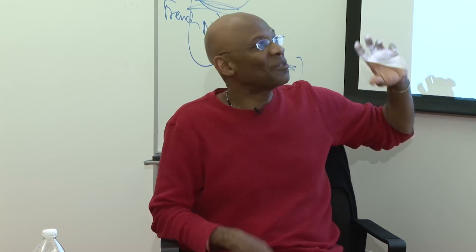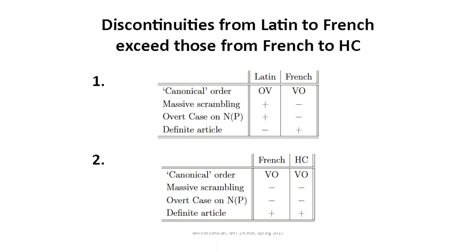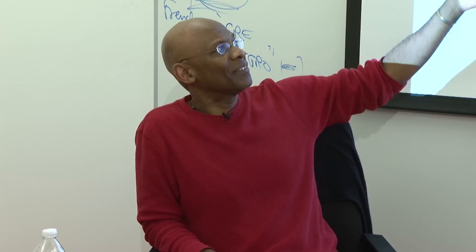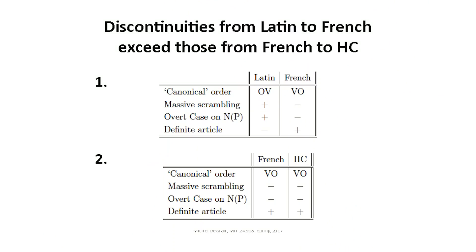So these are four basic properties you find in Latin that you don't find in French. Along these four major parameters, French is very different from Latin. So if one were to take the kind of words used to describe Creole, you would say French has broken Latin grammar. Because you have four basic properties of Latin that French speakers somehow lost as they learned to speak Latin and created French. But if we take those very same properties and compare French and Haitian Creole, they are the same.